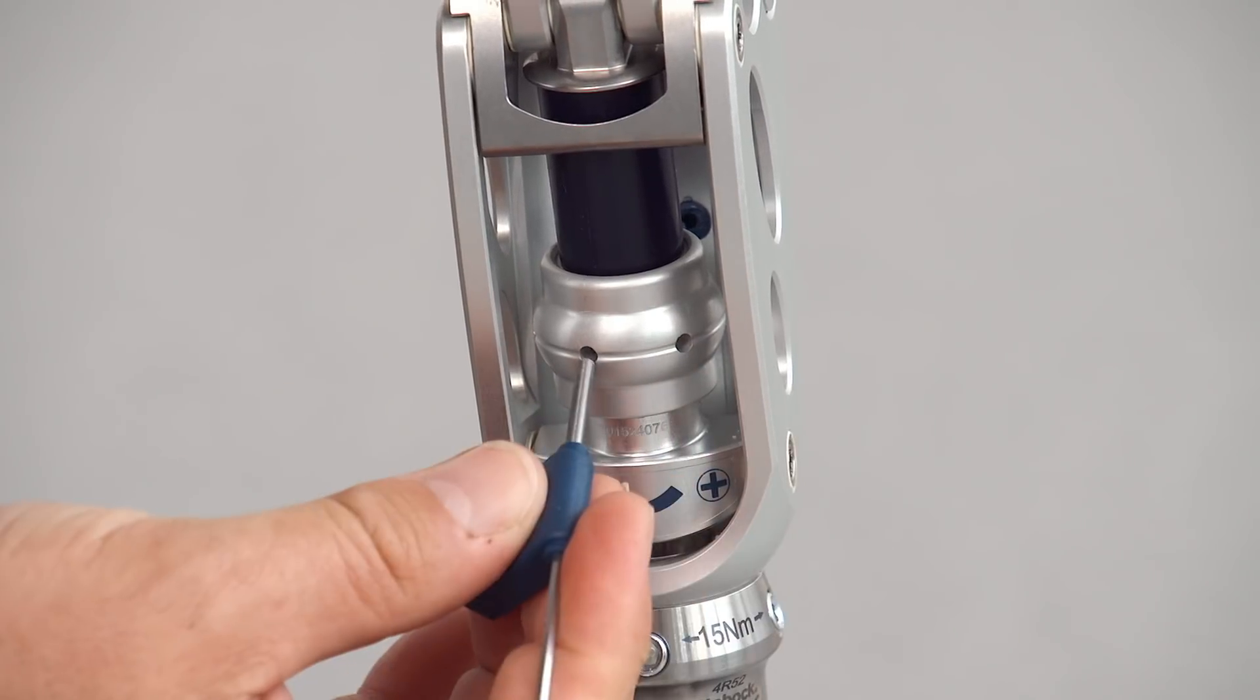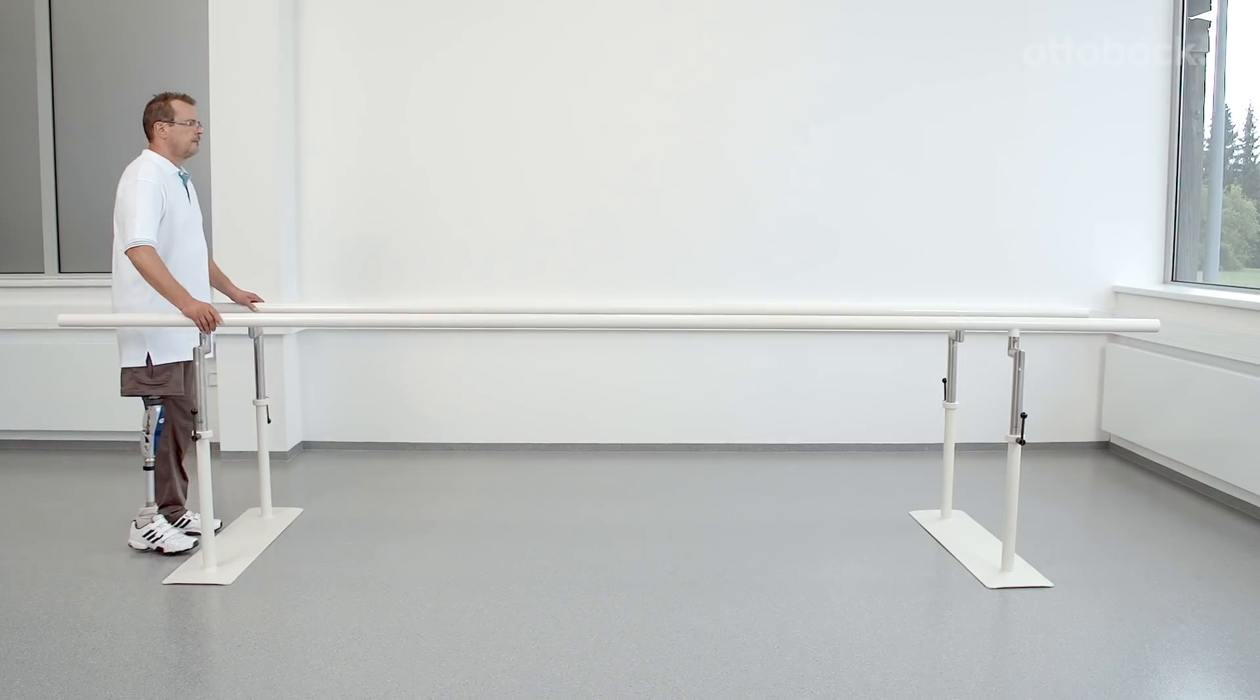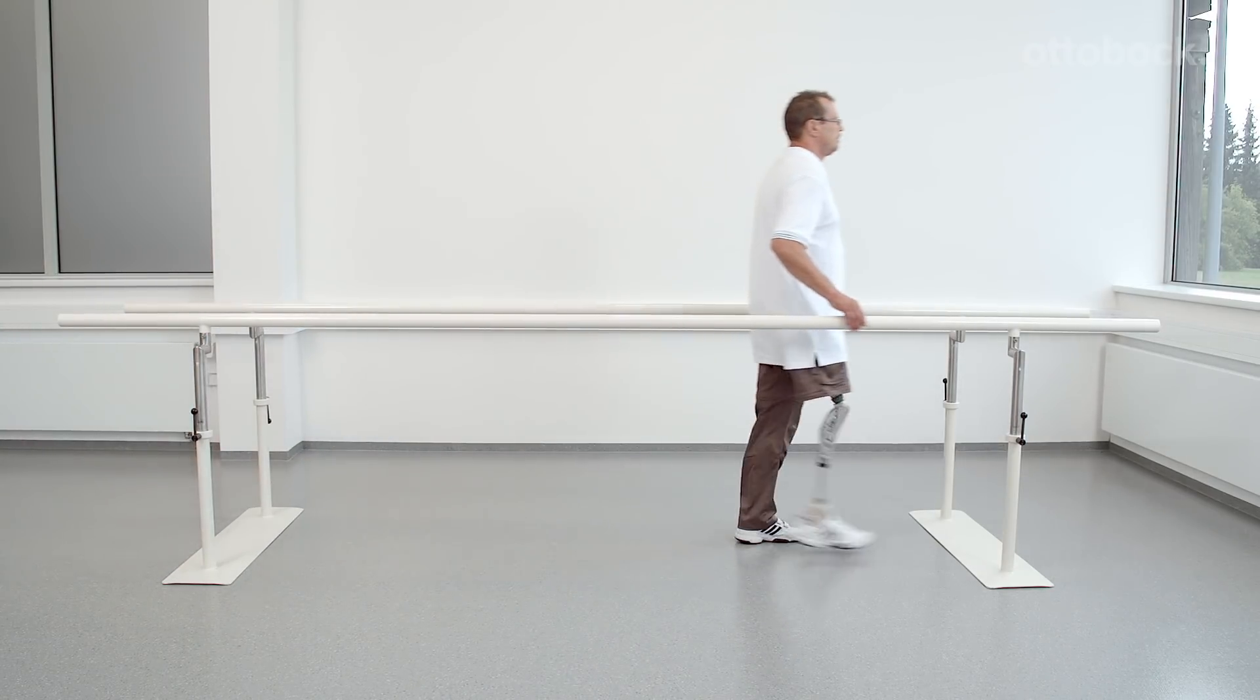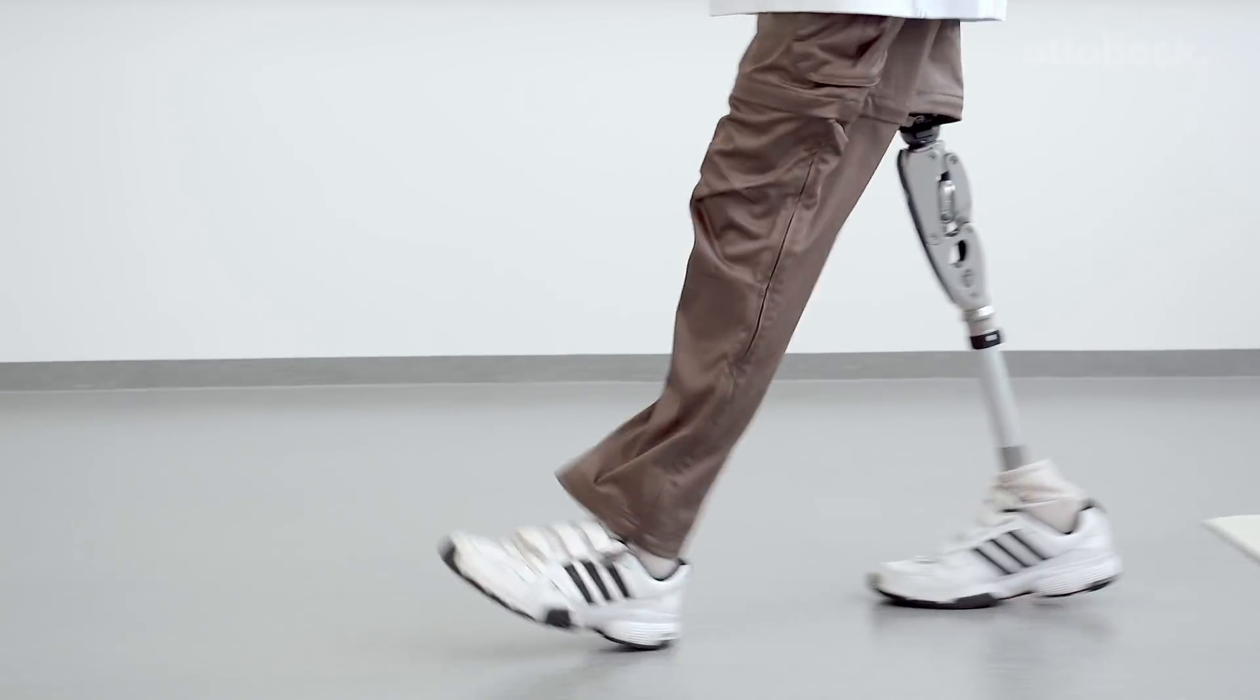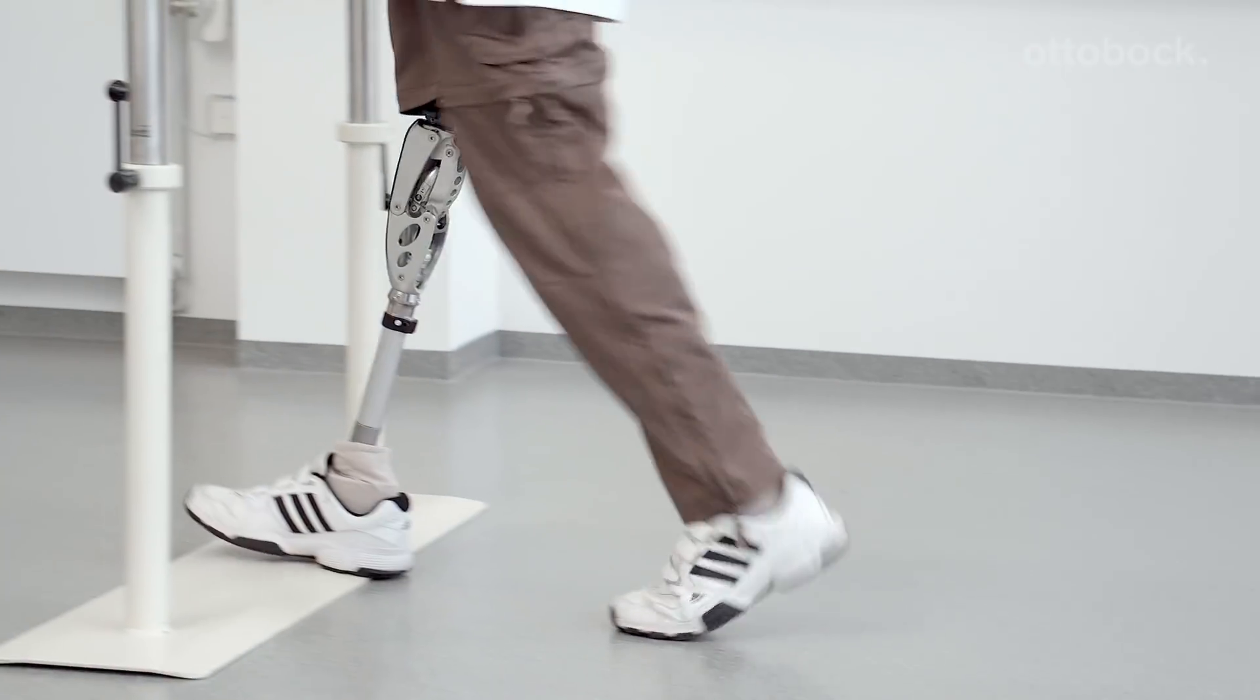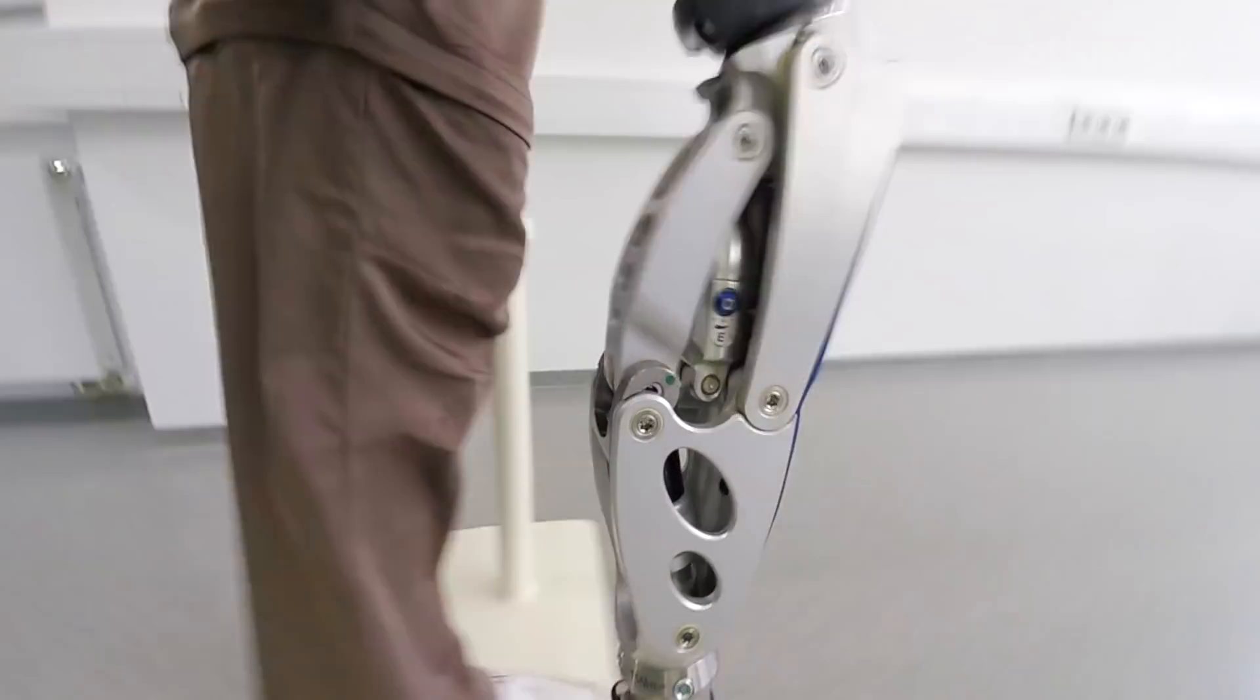The knee flexion is controlled at heel strike by the adjustable elastomer element and allows a stance phase flexion of up to 15 degrees. At this point, the EBS unit has too much pre-tension, which leads to no stance phase flexion. The user cannot take advantage of the natural stance phase flexion.